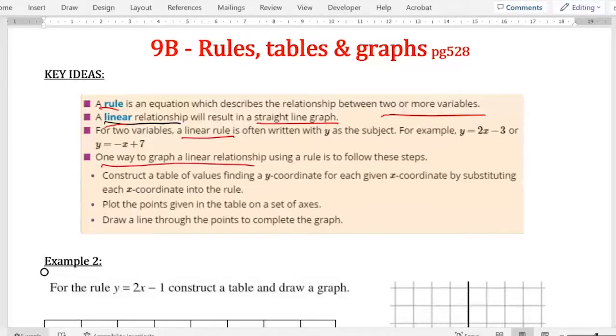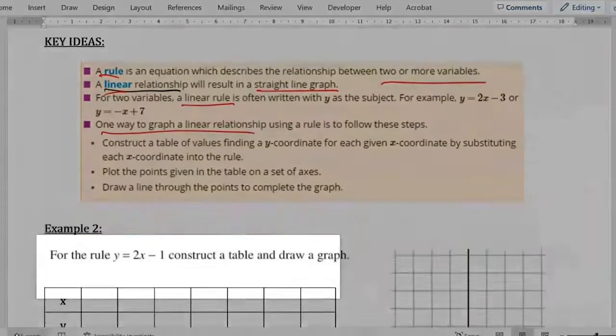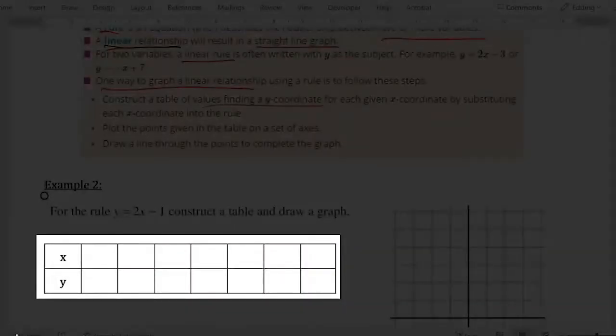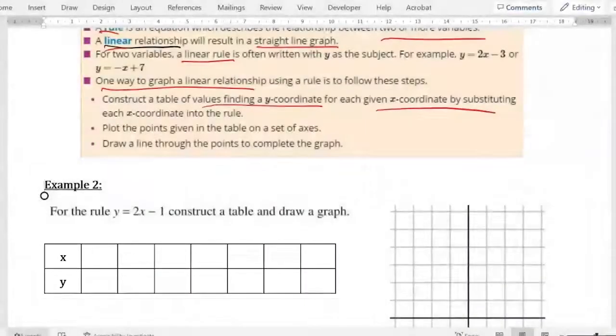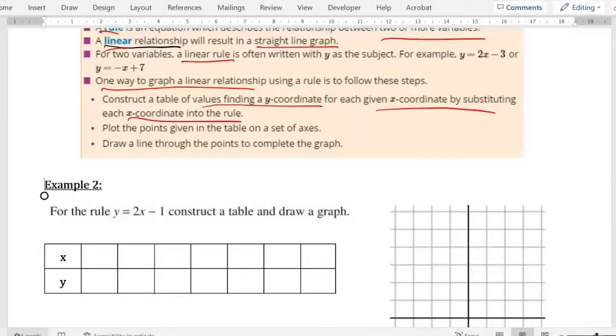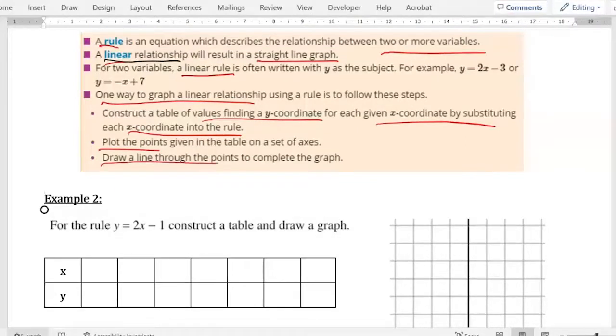So one way to graph a linear relationship using a rule is to follow these steps. We make a table. And we find the values of the y coordinate for each of the given x coordinates by substituting each x into the rule. Then we plot the points. Then we draw a line through the points. And if we have a straight line, then we've proven our linear relationship and that rule works.